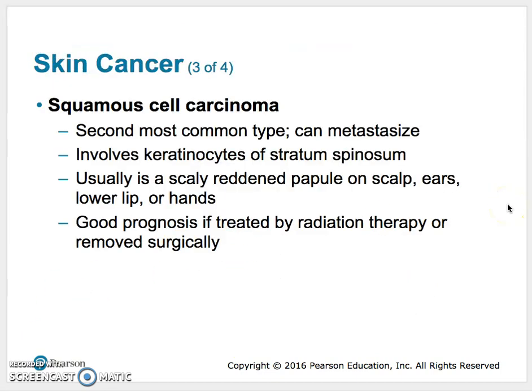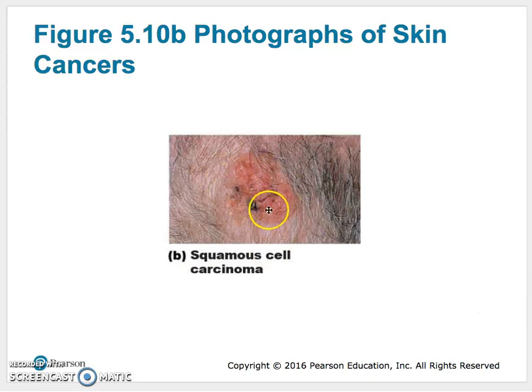Next, squamous cell carcinoma — the second most common type — it can metastasize, meaning move out of its origin. Squamous cell carcinoma is cancer of the keratinocytes in the stratum spinosum. Keratinocytes are the cells affected by squamous cell cancer. You'll see scaly, red bumps. You often see them on older, bald men. Areas like the scalp, ears, lower lip, and hands — areas with lots of sun exposure and generally low protection. With radiation and surgical removal, people are usually in pretty good shape. Here is an example of squamous cell carcinoma.